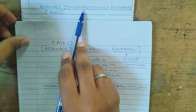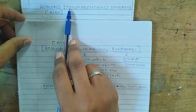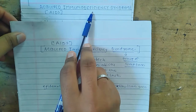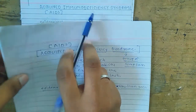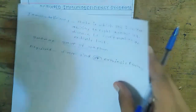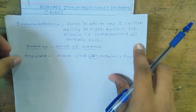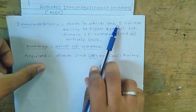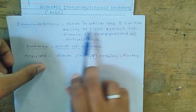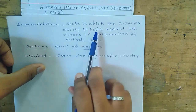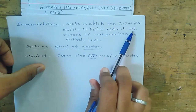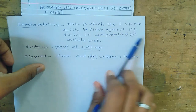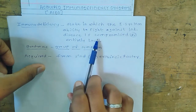First of all, we will discuss what is Immunodeficiency. Immunodeficiency means the state in which the immune system's ability to fight against infectious disease is compromised or entirely lost.